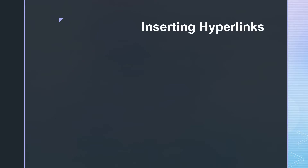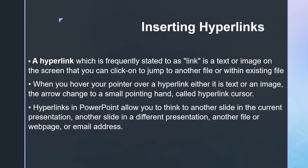Another advanced technique is inserting hyperlinks. A hyperlink, frequently referred to as a link, is a text or image on the screen that you can click on to jump to another file or within an existing file. When you hover your pointer over a hyperlink, the arrow changes to a small pointing hand called the hyperlink cursor. Hyperlinks in PowerPoint allow you to link to another slide in the current presentation, another slide in a different presentation, another file or webpage, or an email address. When text is used as a hyperlink, it is usually underlined and appears in a different color.